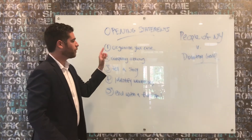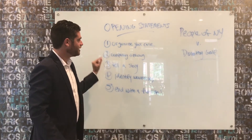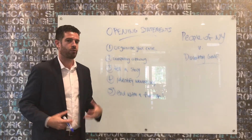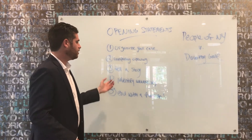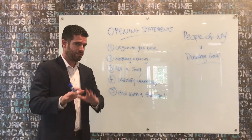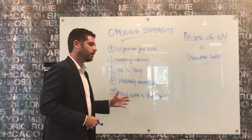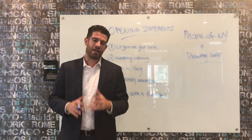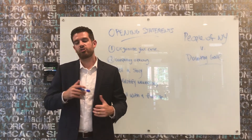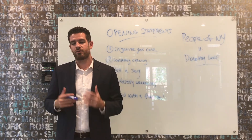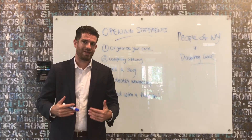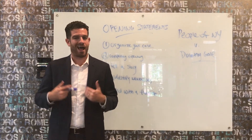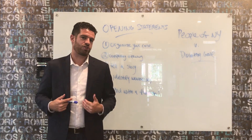So just to recap: you want to use your opening statement to organize your case. Give a really compelling opening — an impact statement. Tell your story in a compelling, creative way. Identify your weaknesses, even though that might be difficult. And end with a flourish — a call to action that the jurors will remember, which you'll reinforce in your summation to get the verdict that you want. In future episodes we'll talk about how to do that. Thank you for joining us today.